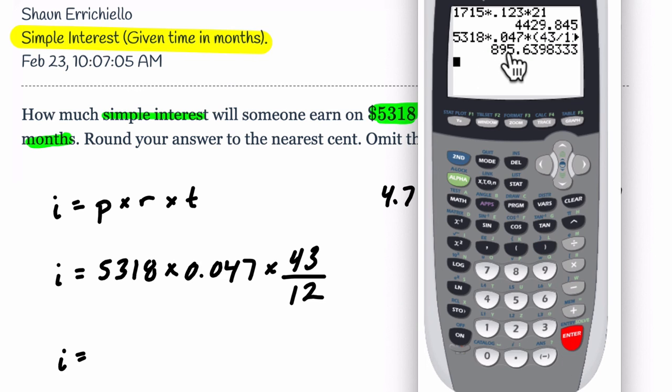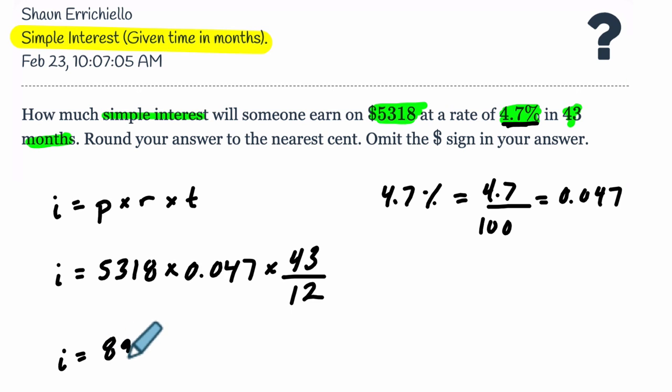And you get 895.6 to the nearest cent. That 3 becomes a 4. So 895.64. And that is the interest that we would accumulate in that many months. All right, I hope this helped.